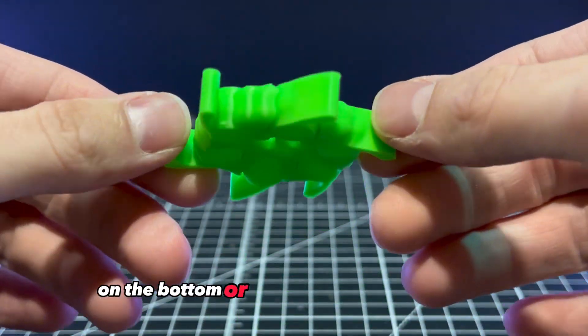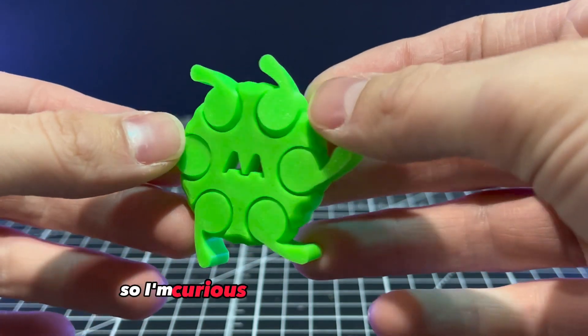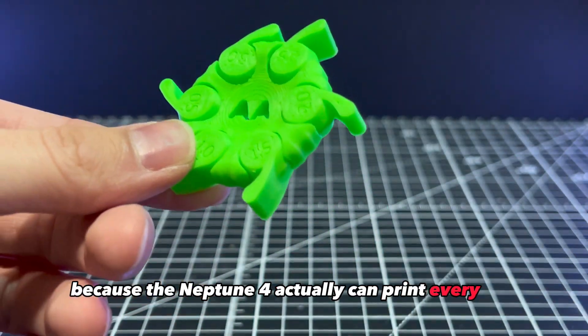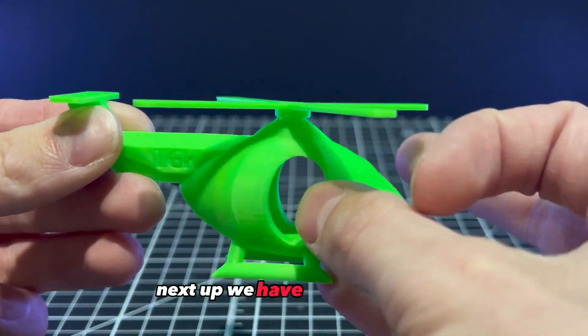I'm curious why this doesn't work, because the Neptune 4 actually can print every one. Next up we have this helicopter.